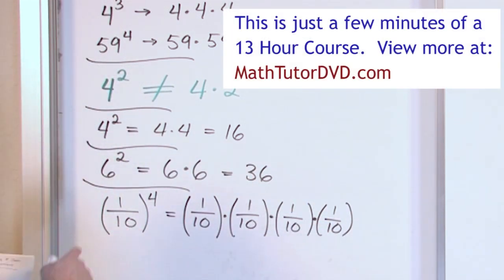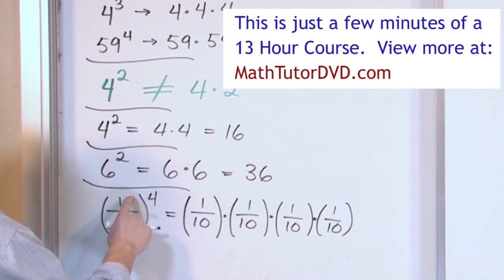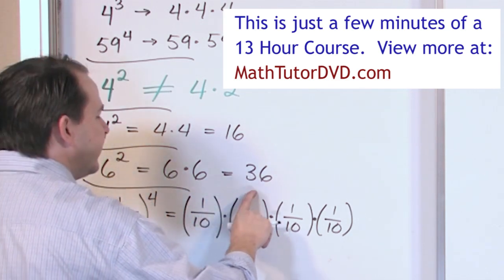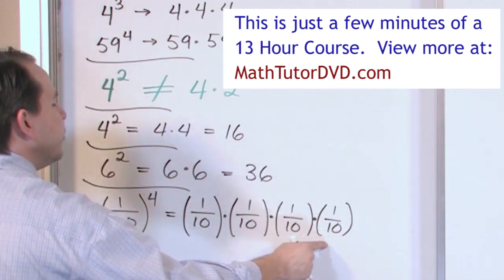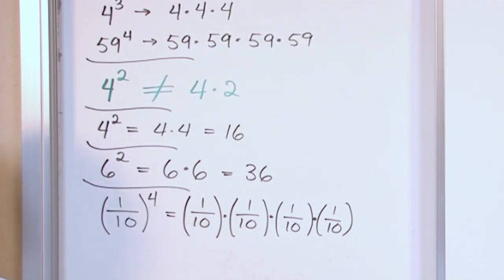So this is exactly what you might expect, just like we were doing six up here. Six times six. Well, this is what's inside, so it's one-tenth times one-tenth times one-tenth times one-tenth. We're doing it four times because we have a power of four there.